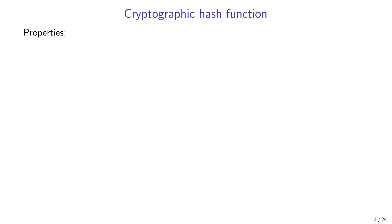Now let's look at the properties of a cryptographic hash function. First, it should be easy to compute a hash value — it must be fast and efficient. Using a computer, we should be able to compute the hash for gigabytes of data in just a matter of seconds.